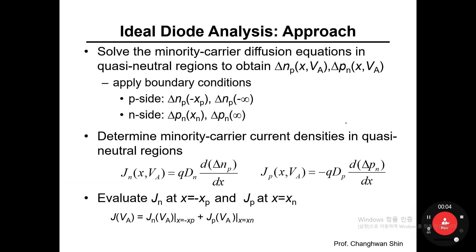In today's lecture, I'm going to give you some more detailed steps to get to the ideal diode equation. In the last movie clip, I briefly talked about the major steps to get the ideal diode equation. The very first step, number one, was to solve the minority carrier diffusion equations — the second-order partial differential equation with respect to delta n sub p and delta p sub n.